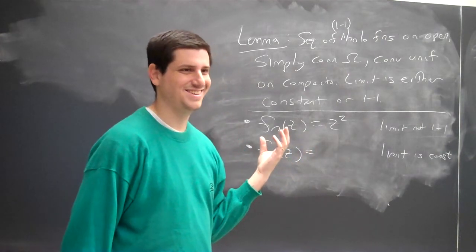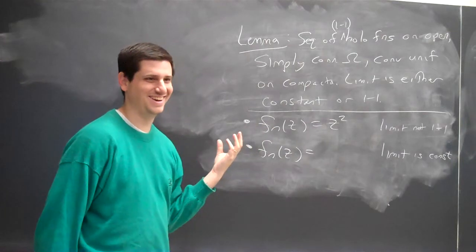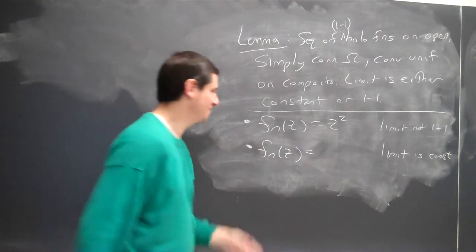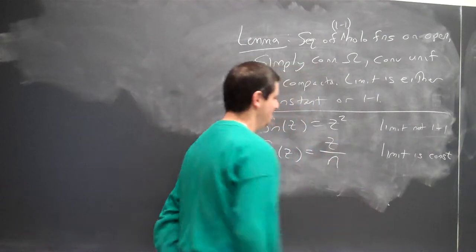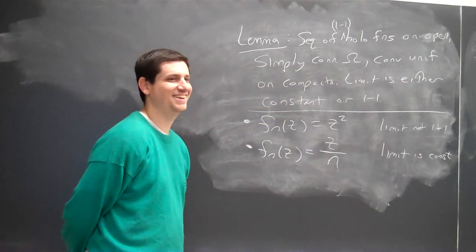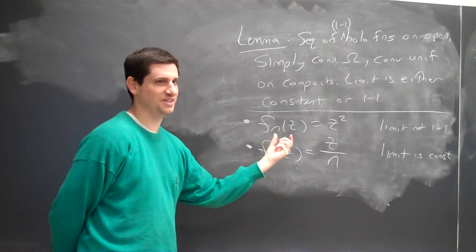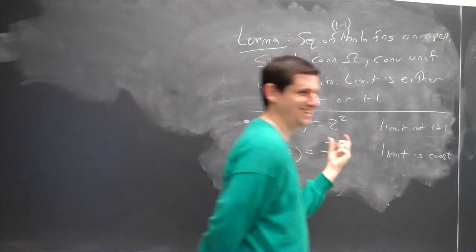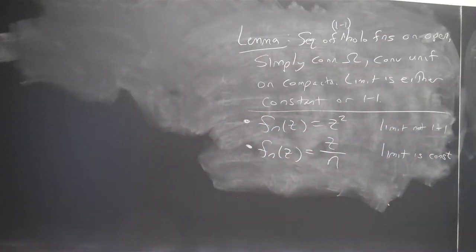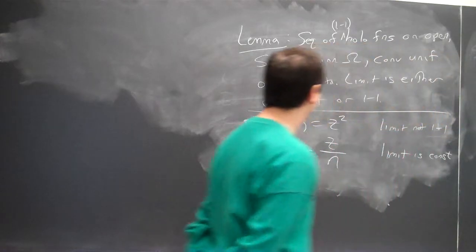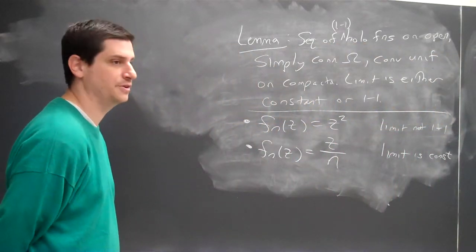z over n? z over n. That's probably the easiest example to come up with. It's clearly going to be defined. It's holomorphic everywhere. And it will converge uniformly to zero. So, it's possible that convergence in the end could be to a constant function.